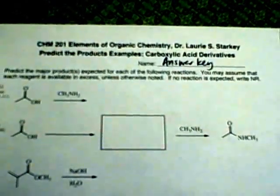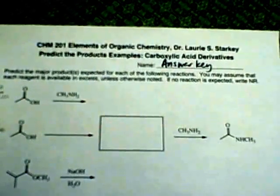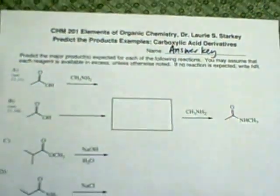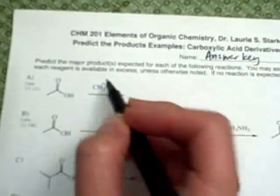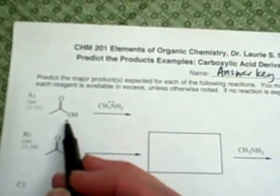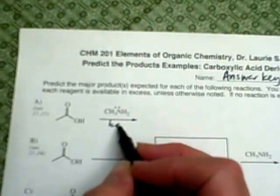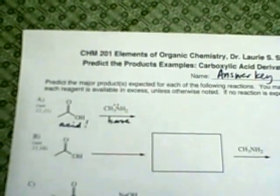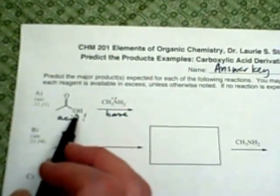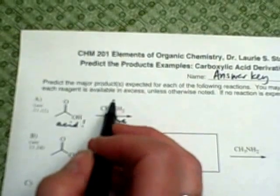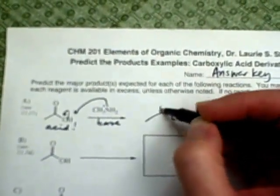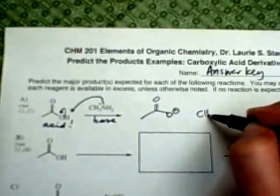I'm going to go through the answer key for the Predict the Products worksheet for carboxylic acid derivatives. The first one looks like it might be an acyl substitution because we have a good nucleophile here and we have a potential leaving group. But what's important to remember is that amines are very good bases and carboxylic acids are called that because that proton there is quite acidic. So if you mix these two, we're not going to have a substitution reaction take place. We're going to have a proton transfer reaction take place instead.